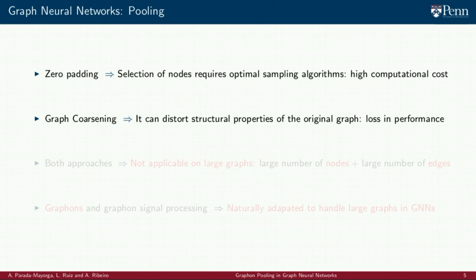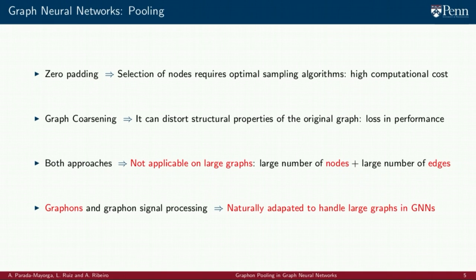And when graph coarsening is used, a distortion of the structural properties of the original graph can be produced, which leads to a loss in performance. But most importantly, both approaches are not applicable when the graphs considered are large. They are limited by their computational cost. And this is even more critical when the graphs considered are dense, which means the number of edges is large. However, graphons and graphon signal processing are naturally adapted to these scenarios where large and dense graphs are involved.